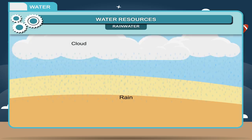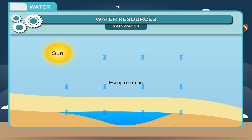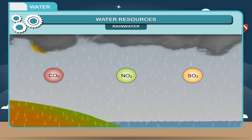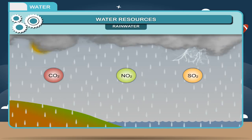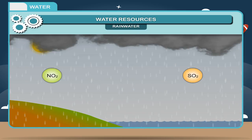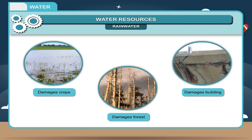Rain water is considered the purest form of all naturally occurring water because it is formed by natural distillation of surface water by the heat of the sun. However, rain water contains some impurities. Gases like carbon dioxide, nitrogen oxide, and sulfur dioxide emitted from the exhaust of vehicles and industries get mixed with the air. Carbon dioxide dissolves to form a weak acid called carbonic acid, which causes erosion to rocks containing lime. Sulfur dioxide and nitrogen dioxide react with oxygen and water vapor and fall on earth as acid rain, which damages crops, forests, buildings, and the environment in general.